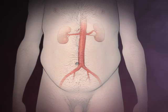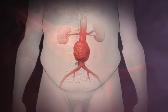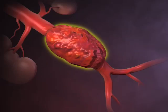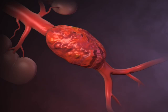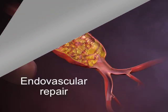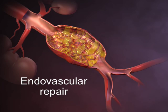Abdominal aortic aneurysm is a potentially life-threatening condition characterized by degenerative changes in the wall of the abdominal aorta that lead to progressive dilatation and possible rupture if the condition is untreated. The traditional approach to abdominal aortic aneurysm repair has been an open surgical procedure. Endovascular repair using an endovascular stent graft is a more recently developed approach.